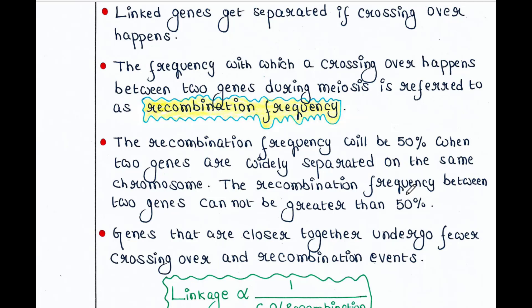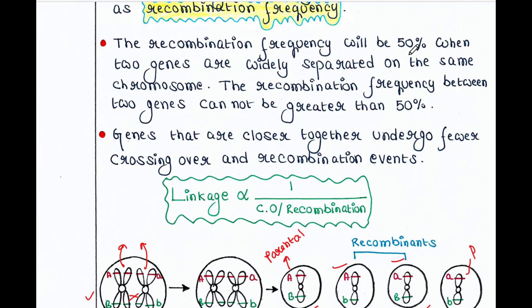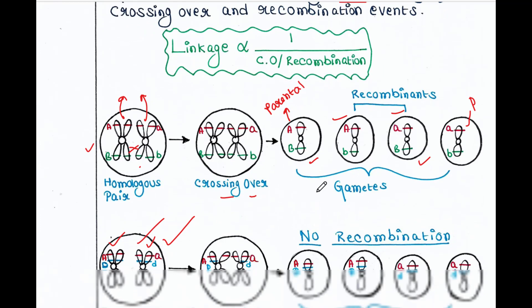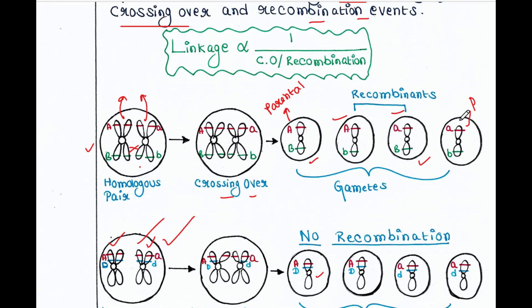The frequency with which crossing over happens between two genes during meiosis is referred to as recombination frequency. Suppose 100 gametes are formed — among those 100 gametes, how many recombinations occurred? That is called the recombination frequency. The recombination frequency will be 50% when two genes are widely separated on the same chromosome. This 50% frequency is the highest frequency that can happen — the recombination frequency between two genes cannot be greater than 50%. Genes that are closer together, like A and D, undergo fewer crossing over and recombination events, with the least probability that crossing over will happen.